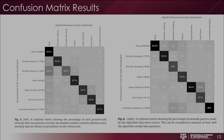To measure performance, two confusion matrices were generated. Figure five shows how well the algorithm correctly identifies each type of anomaly based on ground truth labels. Figure six shows how well the algorithm avoids false positives, measuring reliability against incorrect predictions. Overall, both matrices show fairly accurate anomaly detection, though some anomalies are harder to detect — recoater streaking is only 50.6% in figure five and 65% in figure six. However, the algorithm is very good at detecting anomaly-free cases as well as recoater hopping, debris, and incomplete spreading.